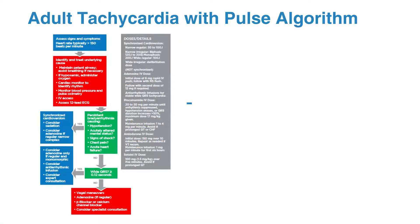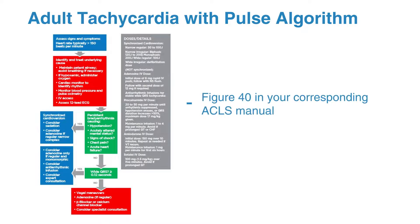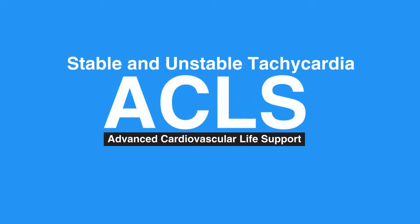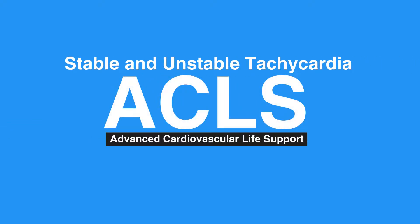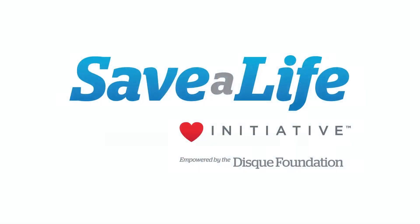For the adult tachycardia with pulse algorithm, refer to figure 40 in your corresponding ACLS manual. This concludes our lesson on stable and unstable tachycardia. Next, we will review Acute Coronary Syndrome.